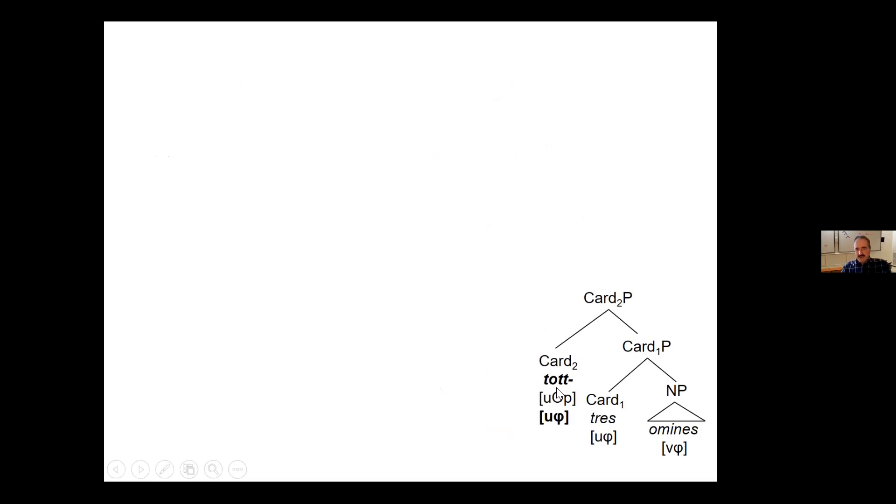Now look at the derivation in some detail. So we have the structure, which I explained to you. And now the cardinal head, both cardinal heads have unvalued phi features. And of course, the NP, the noun has valued phi features. And then we have a first agreement step where the unvalued phi features of the cardinal head, of the lower cardinal head are valued. And then we can assume cyclic agree, which means that now the upper cardinal head gets valued its phi features by probing the lower one. So this is how we finally get the valued phi features.